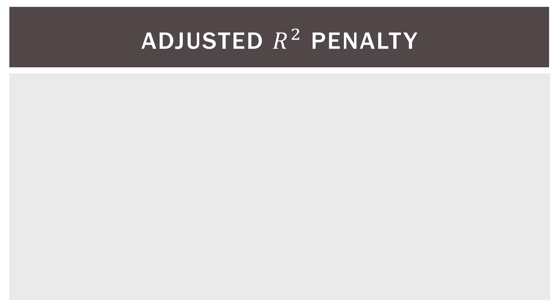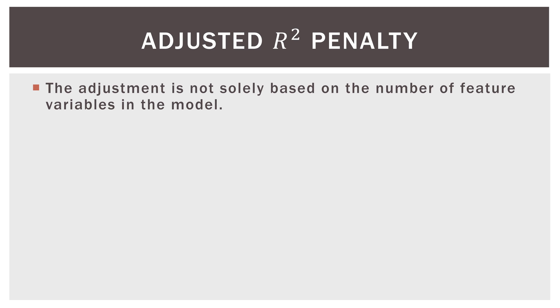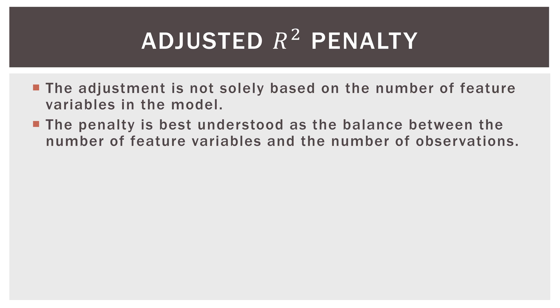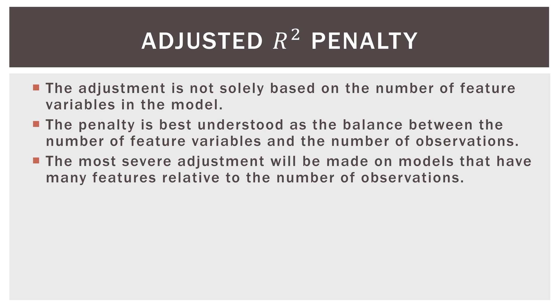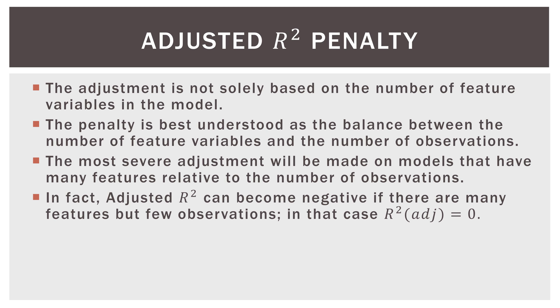The adjusted R-square penalty. The adjustment is not solely based on the number of feature variables in the model. The penalty is best understood as the balance between the number of feature variables and the number of observations. The most severe adjustment will be made on models that have many feature variables relative to the number of observations. In fact, adjusted R-square can actually become negative if there are many features but few observations.